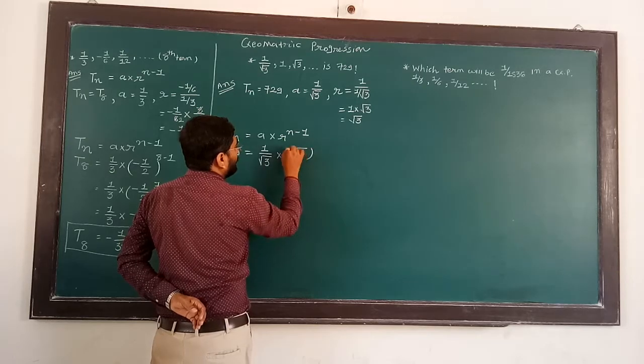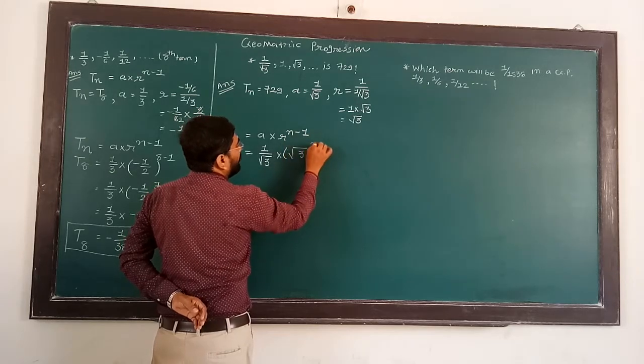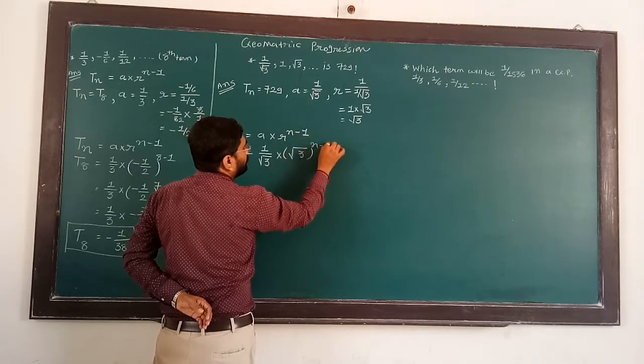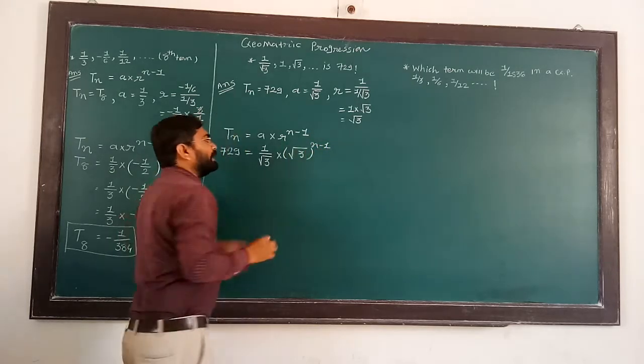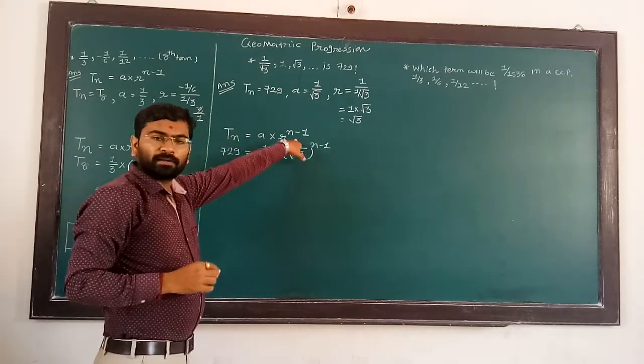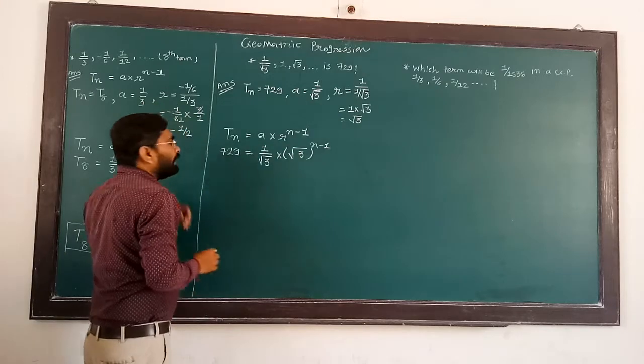Using the formula T_N is equal to A into R to the power N minus 1.